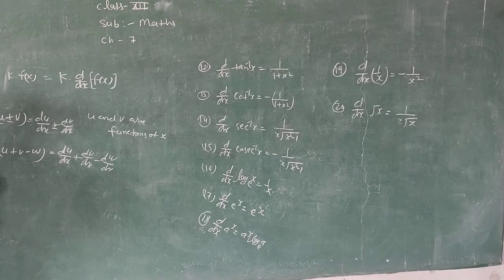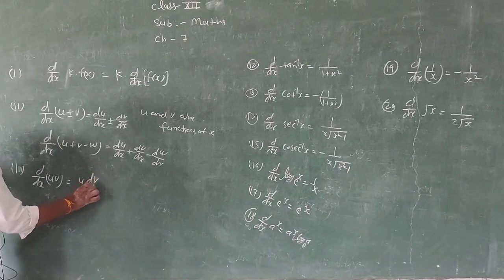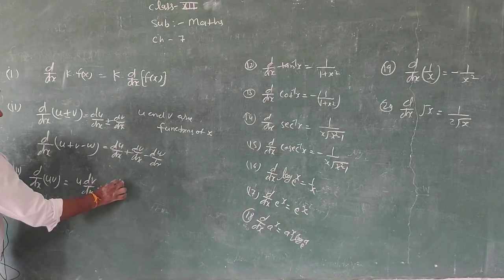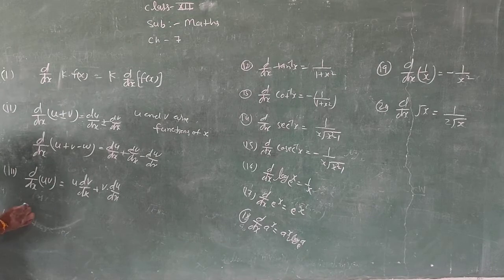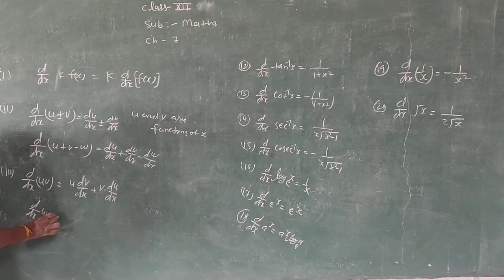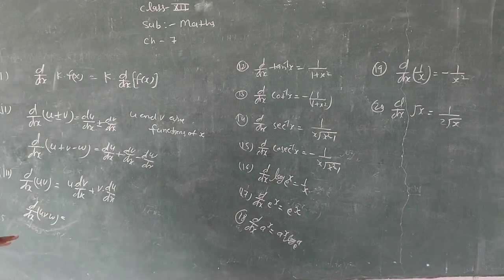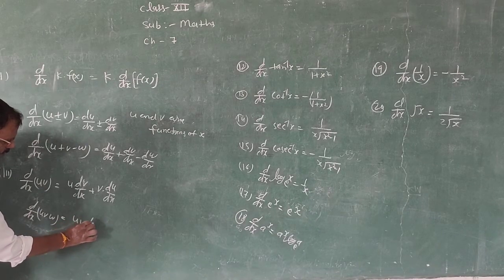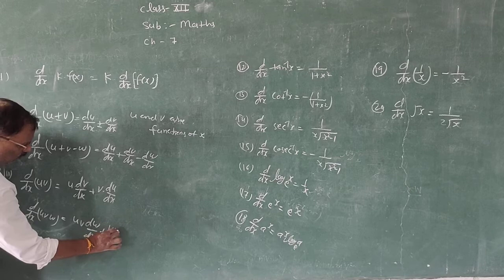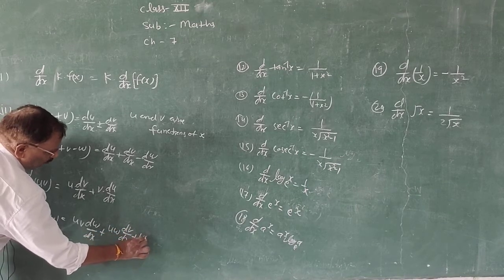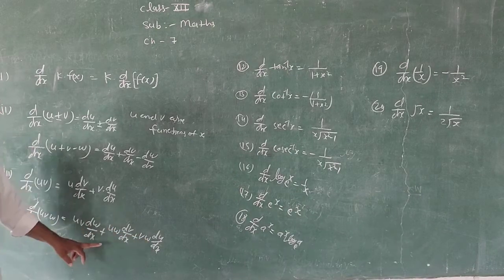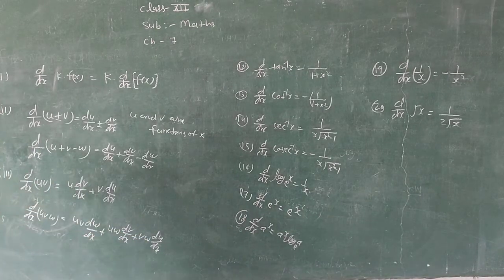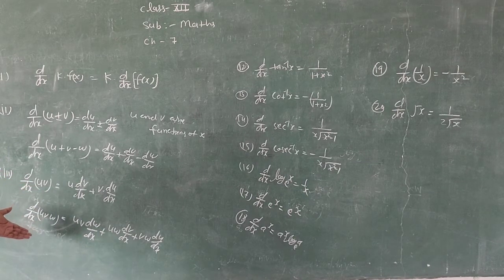Theorem 3 (Product Rule): Differentiation of u · v = first function · differentiation of second + second function · differentiation of first. For product of three functions u · v · w: d/dx = u · v · dw/dx + u · w · dv/dx + v · w · du/dx. At one time, differentiate one function while keeping others. So for product of two or three functions, apply this theorem.